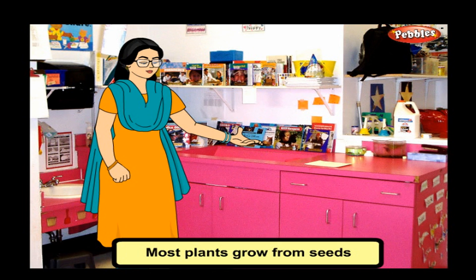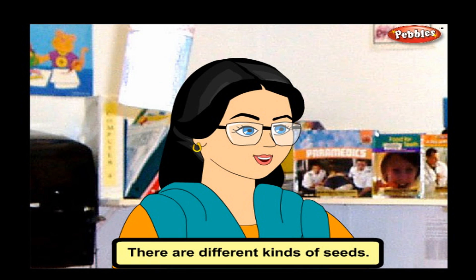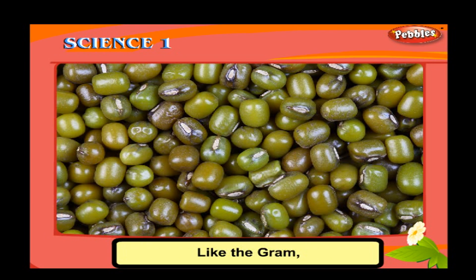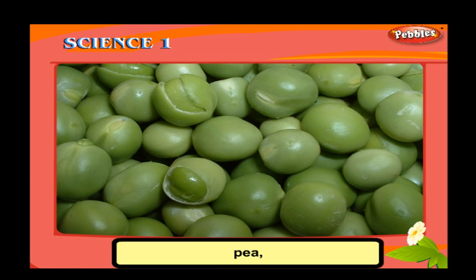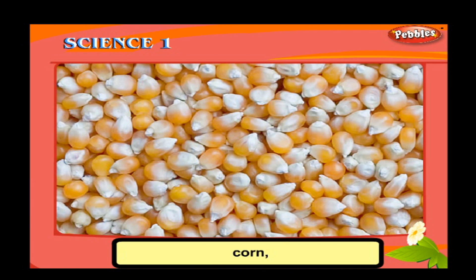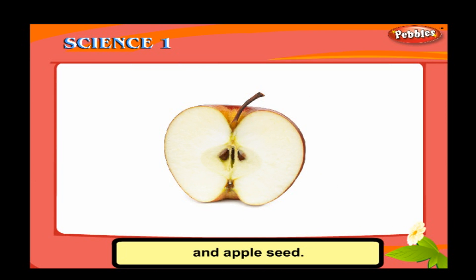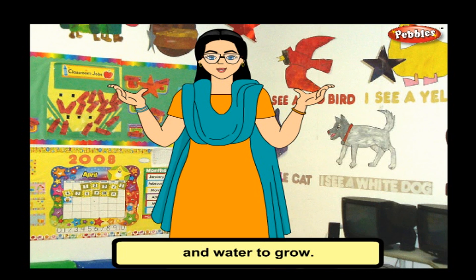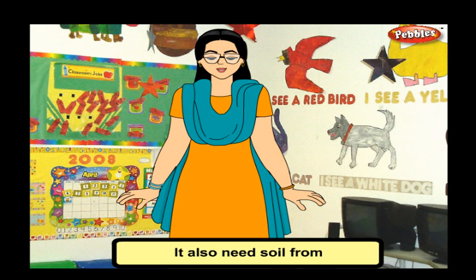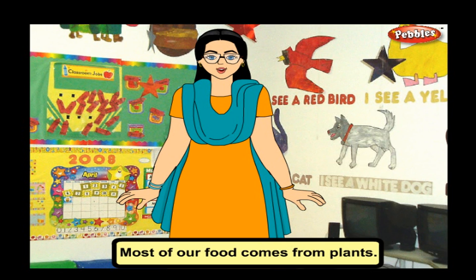Most plants grow from seeds, and some grow from a stem cutting. There are different kinds of seeds like gram, bean, corn, and apple seed. A seed has a baby plant inside it. Plants need sunlight, air, and water to grow. They also need soil from which the roots take nutrients.